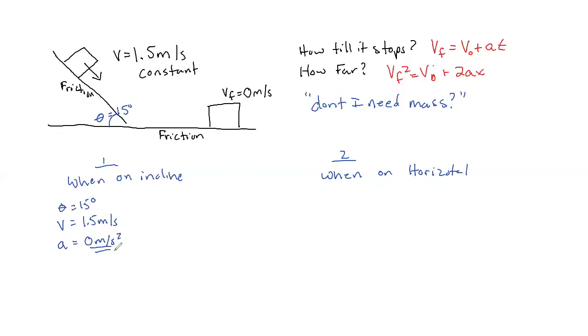Now why that's so important is because that's going to now tell me that F net on the incline is going to be equal to 0 newtons, and this is in the direction of motion, in the DOM. So that's super important because if I look at the forces that are acting in the direction of motion,